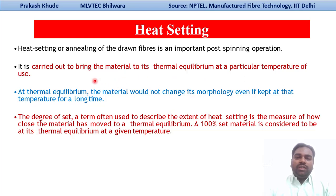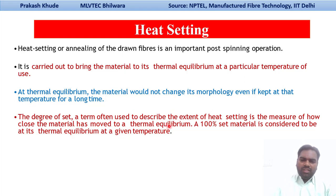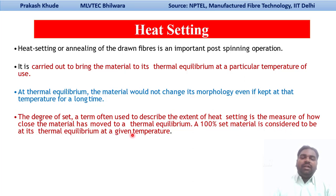There is another terminology: degree of set. This term describes the extent of the heat setting process — it ultimately measures how close the material has been moved to its thermal equilibrium position. A 100% set material is considered to be at thermal equilibrium at a given temperature.